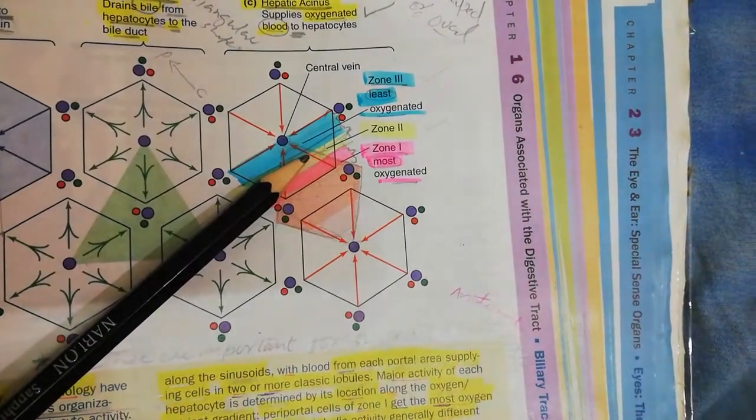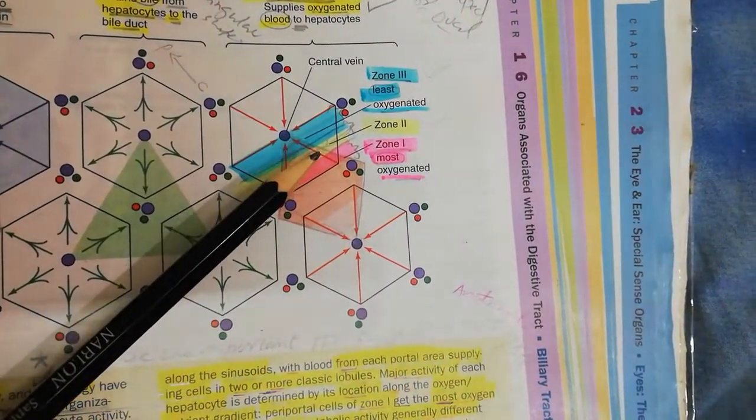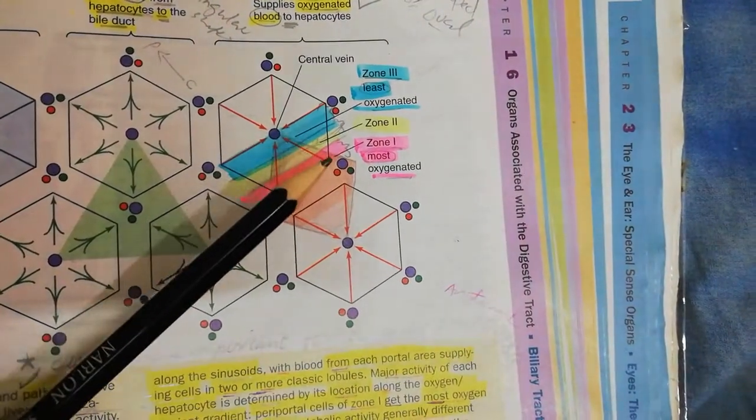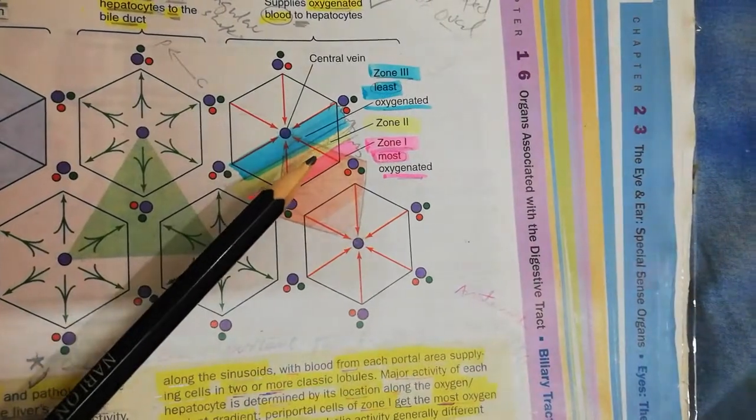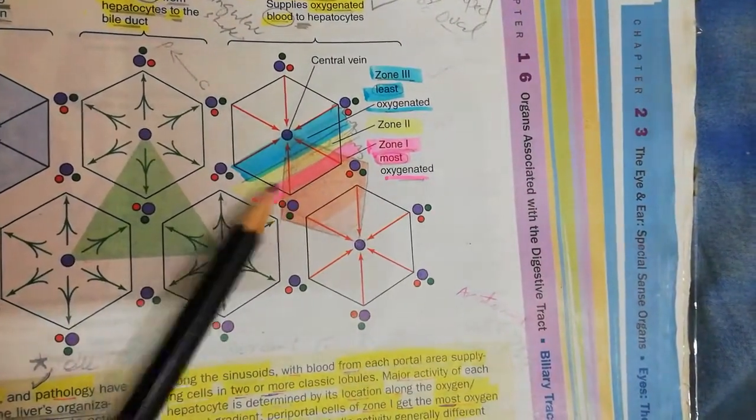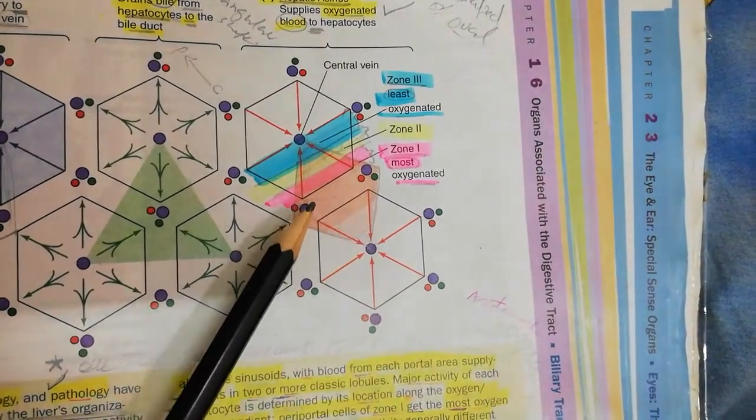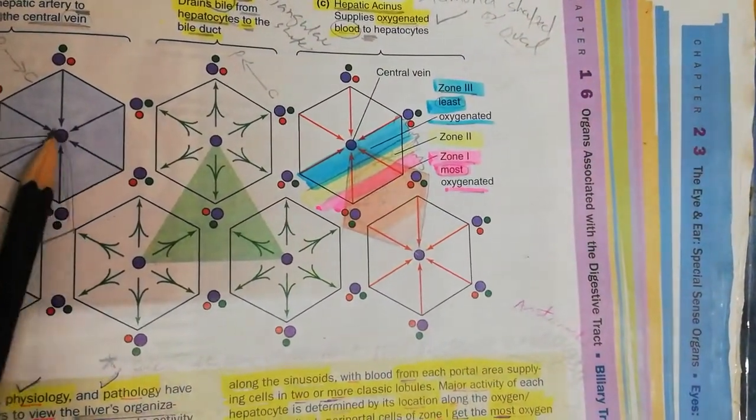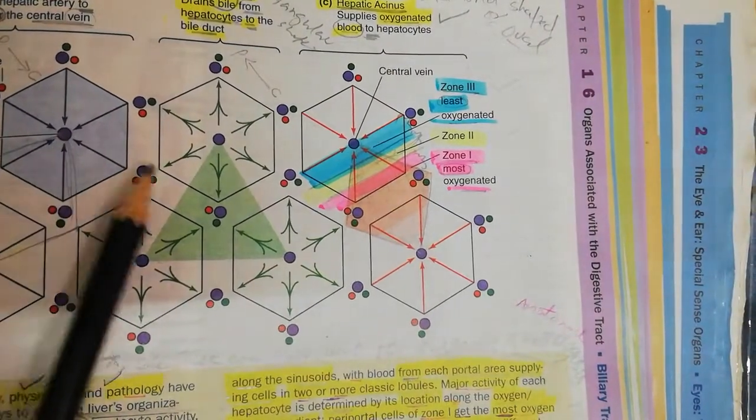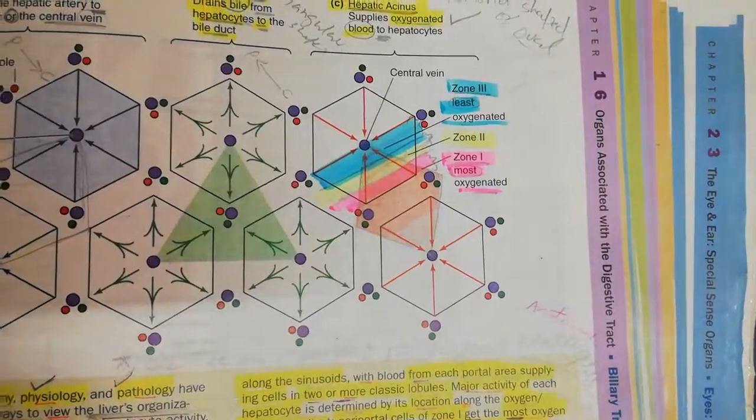Now you can see that the hepatocytes basically adapt to the microenvironment produced by the supply of blood to which they are exposed. So now you are very clear about the three lobules: the classical hepatic lobule, the portal lobule, and the hepatic acinus. Thank you.